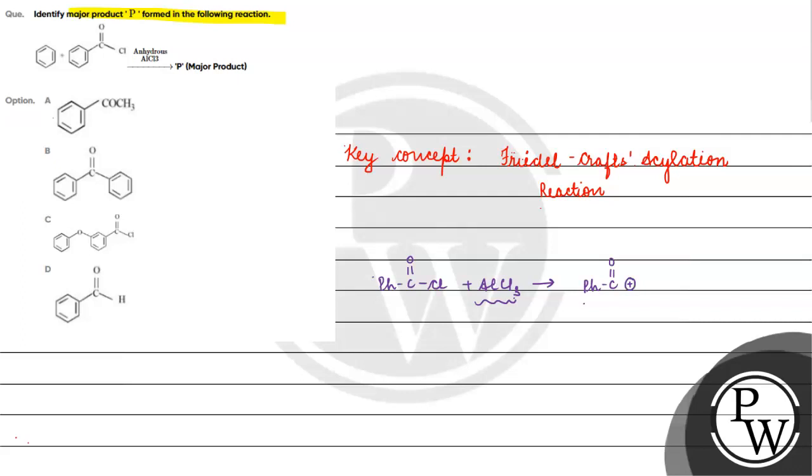This results in the formation of an acylium ion and AlCl4 minus.